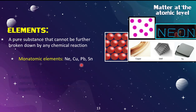Some examples of monatomic elements are neon, copper, lead, and tin. Neon is a noble gas that appears as a gas at room temperature, so in a particle diagram the atoms would be spread apart. Copper, lead, and tin are metals that appear as solids at room temperature, so in a diagram there would be very little space between each atom.